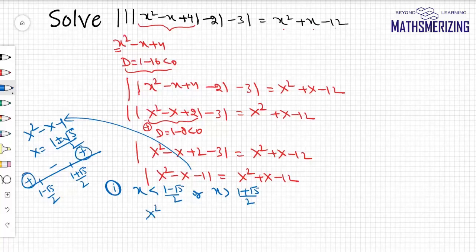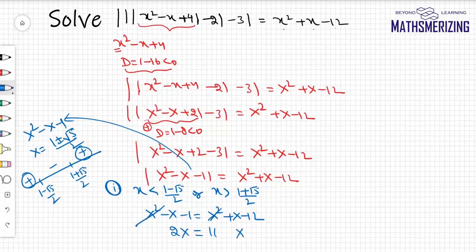In Case 1, since the function is positive, we write x² - x - 1 = x² + x - 12. Cancelling x², we get -x - 1 = x - 12, so 2x = 11, giving x = 11/2. Since 11/2 lies in the valid interval, this is one solution.